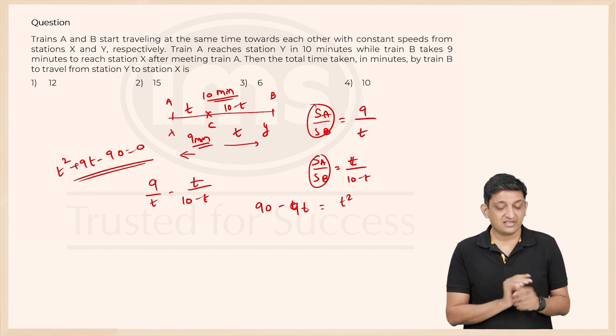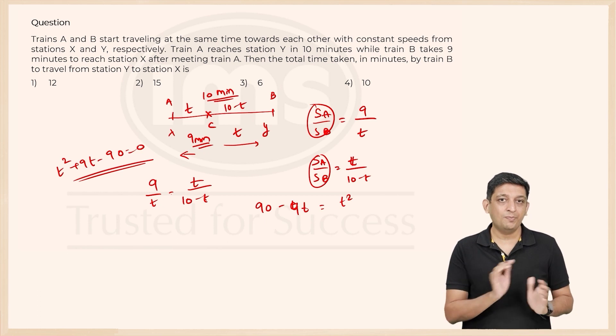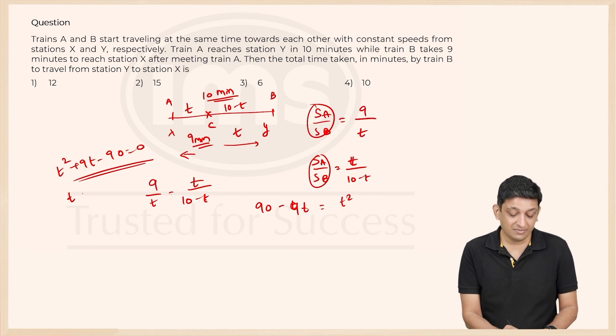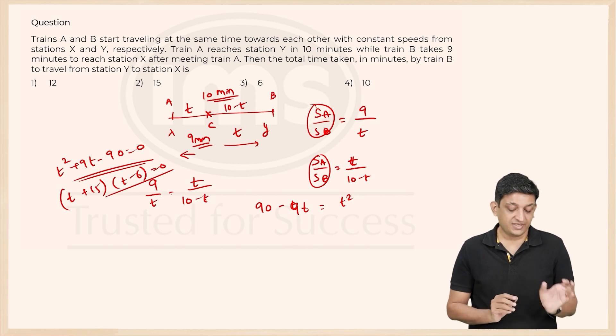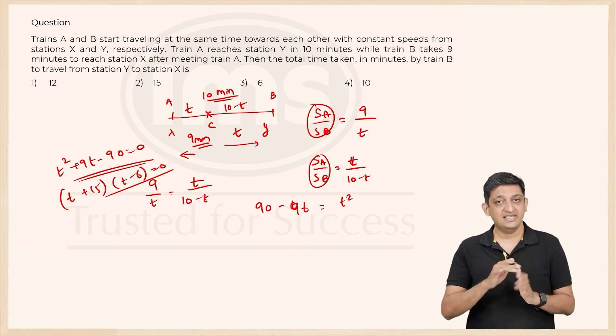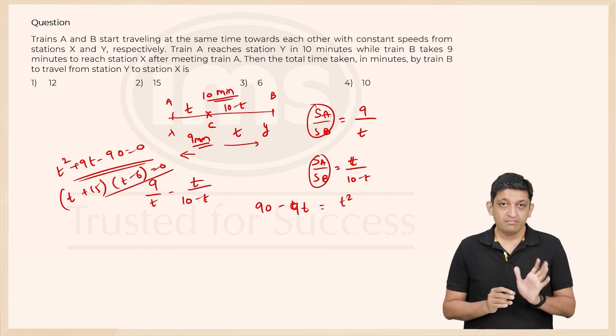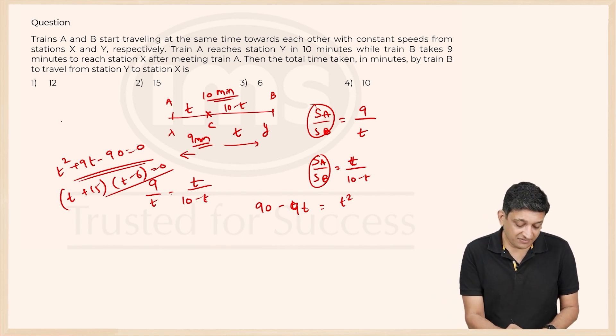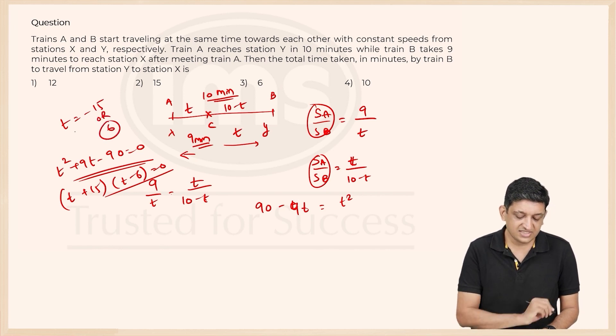Now we need to split this 9T into two parts such that their product is minus 90. So the factorization will be T plus 15 into T minus 6 equals 0, because 15 times minus 6 is minus 90, and 15 plus minus 6 is 9. So we get T equals minus 15 or T equals 6.